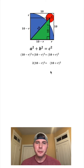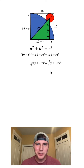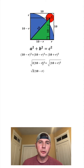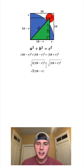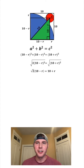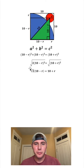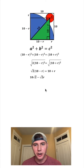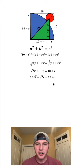(10 minus R)² plus (10 minus R)² is equal to two times (10 minus R)², and then we can just bring down the right side. We can then square root both sides. On the left-hand side, the two becomes square root of two and (10 minus R)² square rooted is (10 minus R). On the right side, the square root of (10 plus R)² is (10 plus R). Now let's distribute the square root of two: 10 gives us 10√2, and negative R gives us minus √2·R, and that's still equal to 10 plus R.